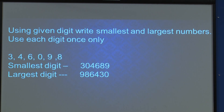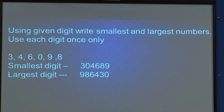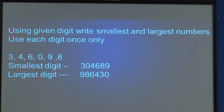We have to start with a natural number, not 0. So we write 3, then 0, then 4 is smaller, then 6, then 8 and 9. All 6 digits are written together to form the number. For the largest number, we start with the largest digit: 9, then 8, then 6, then 4, then 3 and 0.